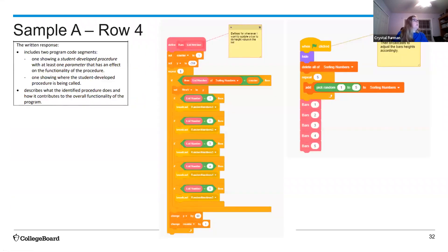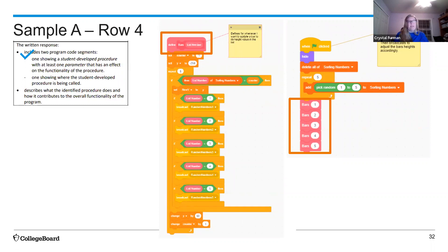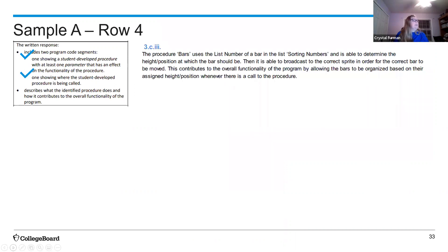Row 4: the procedure is named 'bars,' it's student-developed, and it takes a parameter — so that's good. They call it four times (bars 1, 2, 3, 4). This isn't how I'd write this program — it's not optimal — but it's how the student thought to solve the problem. In the description, they say the procedure 'contributes to the overall function by allowing the bars to be organized' — that's a description, not an explanation, so that's fine. They get row 4.